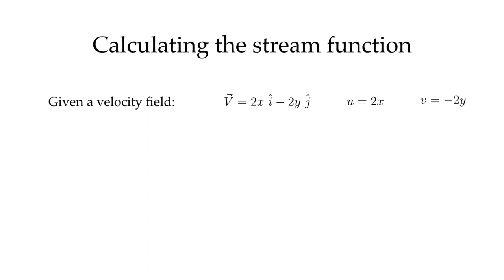Let's look at what else we can do with this stream function by working through an example of calculating it. We'll take the same velocity field: u equals 2x and v equals minus 2y. Let's begin with the u component. In defining the stream function, we said that the derivative of psi with respect to y is defined as the u component — in this case, 2x.